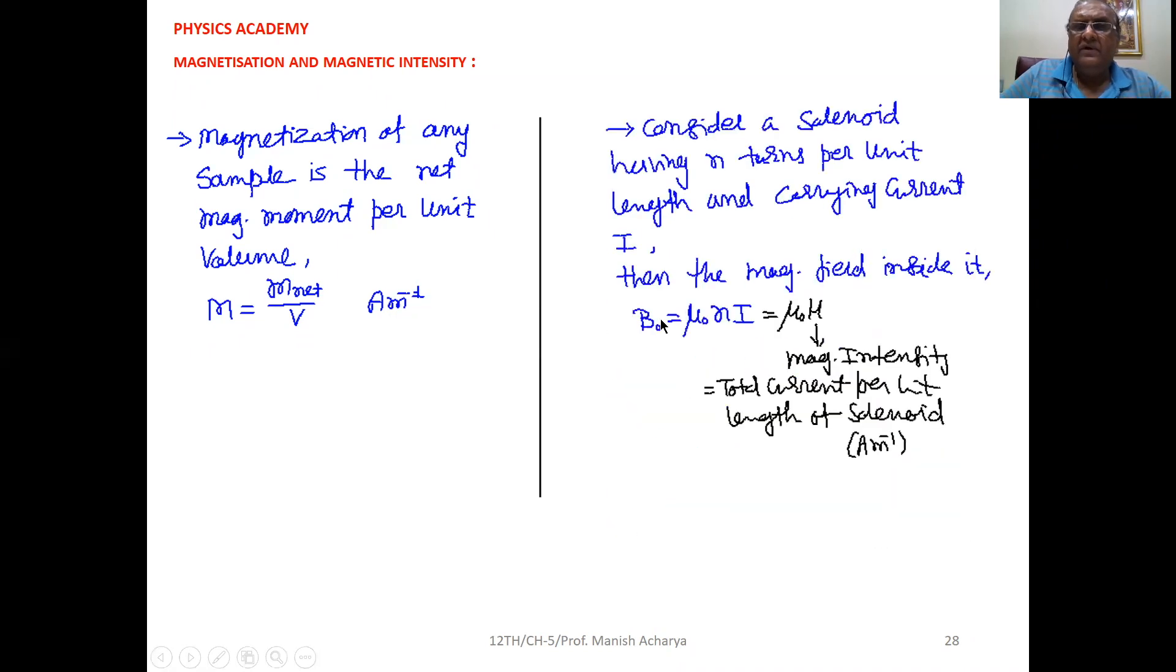if we consider a solenoid having N turns per unit length, which is carrying current I, then in the previous chapter we studied this thing, the magnetic field inside it.